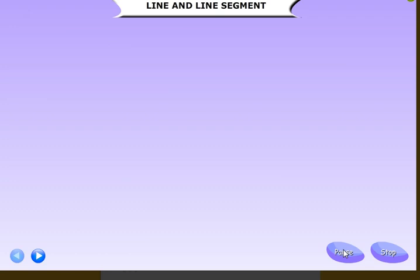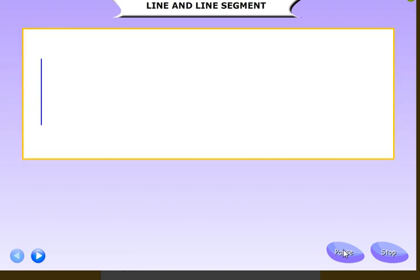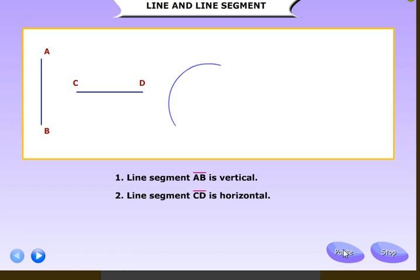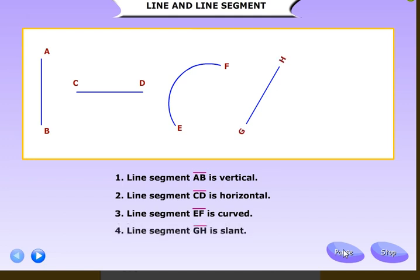Line and line segment. We have already learned that a line segment joins two points. Let us learn a few more things about line and line segment. One, line segment AB is vertical. Two, line segment CD is horizontal. Three, line segment EF is curved.